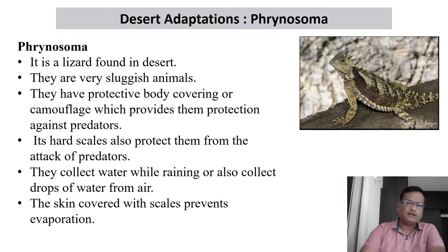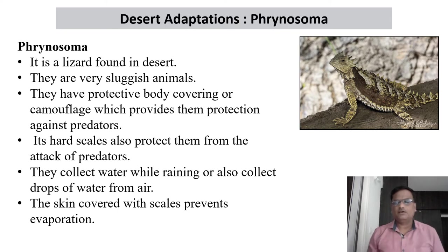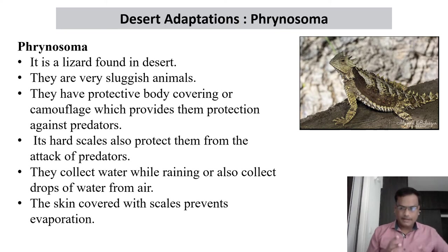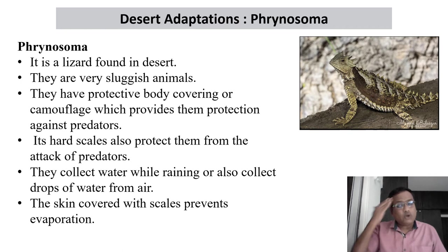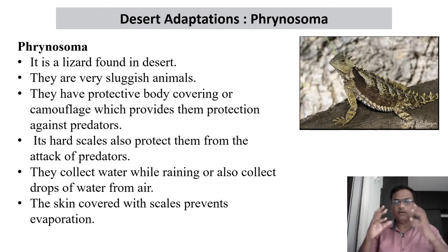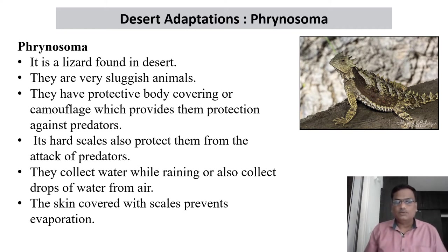They collect water while it is raining, or also collect drops of water from the air. Water is one of the most precious things they find in the desert. Whenever there is slight rain, the Phrynosoma will bend its body — it has an adaptation where the scales open up, and when rain falls on the body the water drops collect and move up to the mouth. This is how it uses its body to catch rainwater.